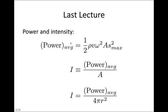Finally, we finished up by showing the power and intensity relationships. The average power delivered by a sound wave is given by one-half times ρ, the density, times v, the velocity, times ω squared, times A, the area, times s_max squared, the amplitude. So the intensity equals the average power over the area. Generally, as a sound wave travels through space it travels at the same speed in all directions, so the surface area it covers is in the shape of a sphere, and A is given by 4πr².